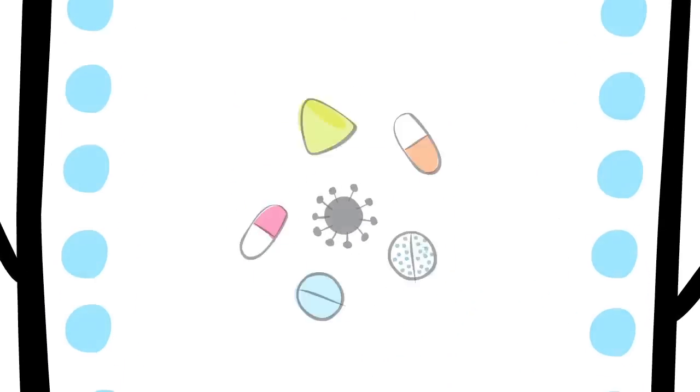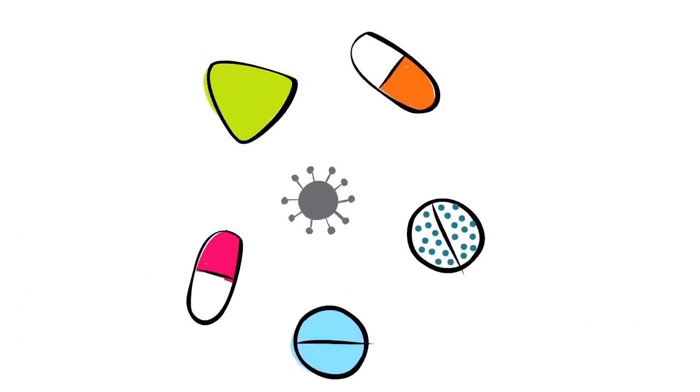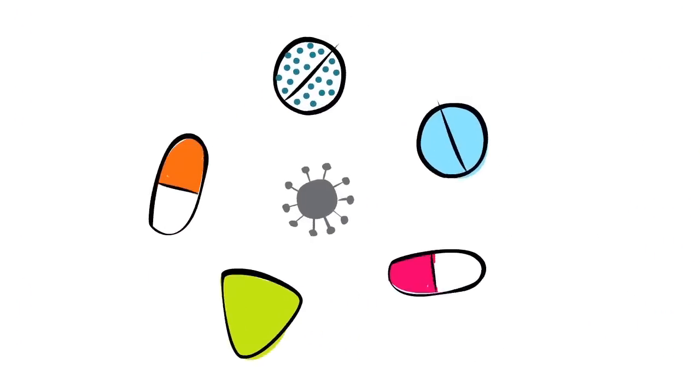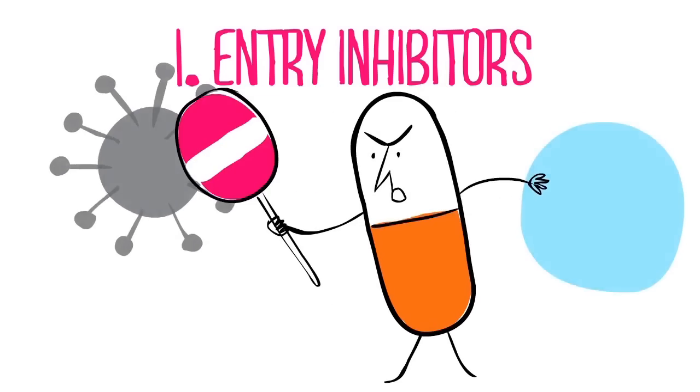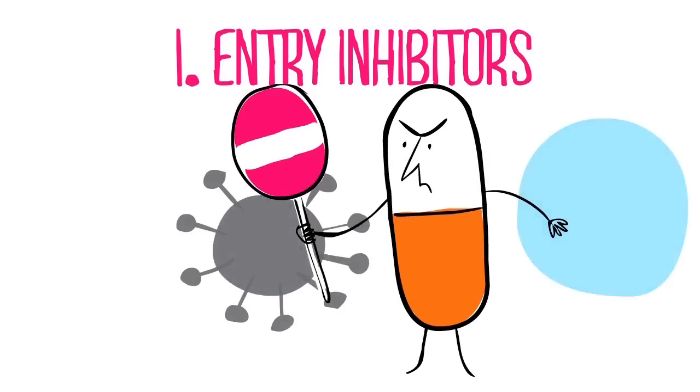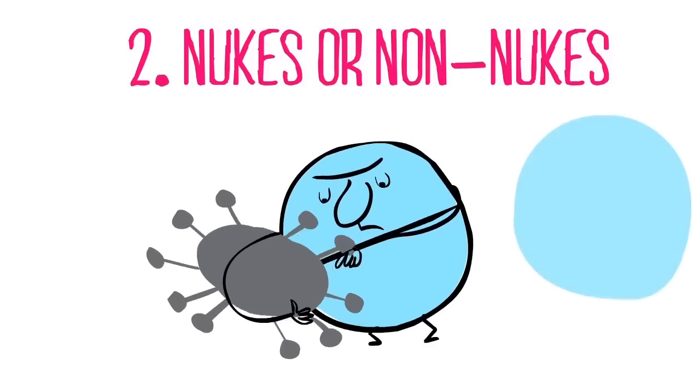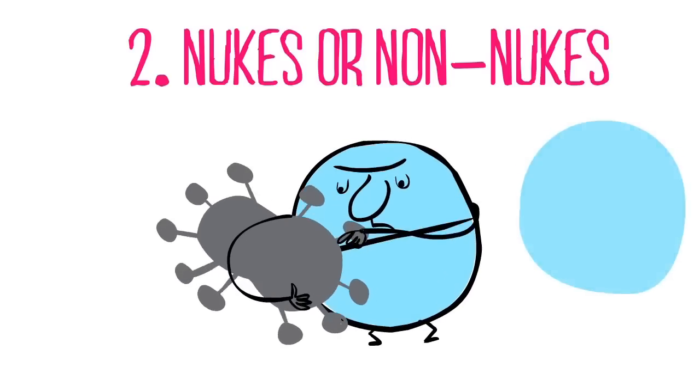All anti-HIV drugs try to prevent HIV from copying itself. The different types of drugs do this in four different ways. First, stop HIV from entering CD4 cells. These are called entry inhibitors. Second, stop HIV from changing its structure when it prepares to copy. These are called nukes or non-nukes.